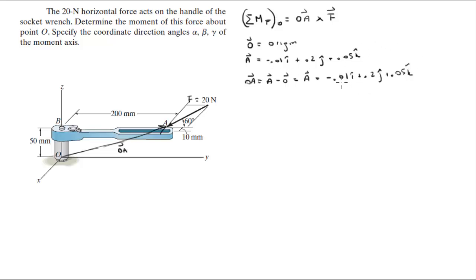Notice that I converted already into meters because newton meters is a much more common unit than newton millimeters. So all I did is just convert it to meters. This is 0.05 meters, this is 0.2 meters and this is 0.01 meters. That's why you see these numbers.